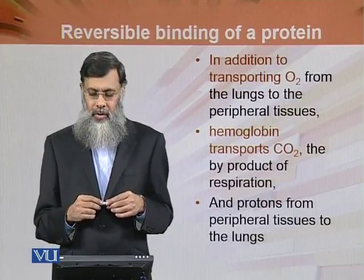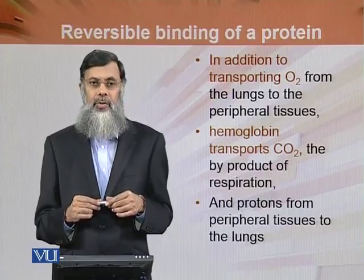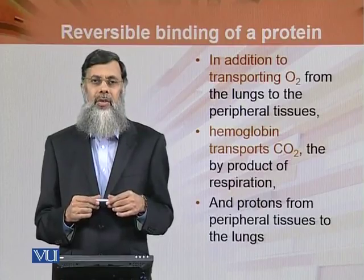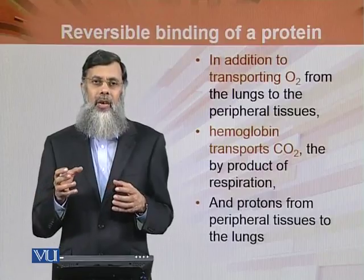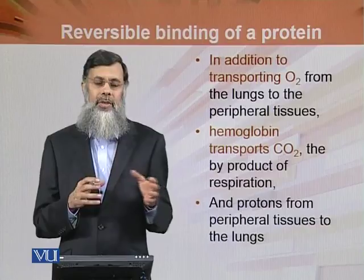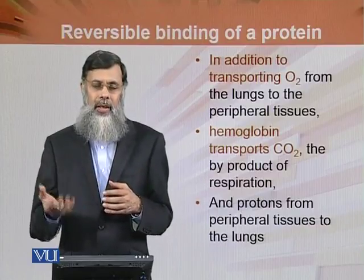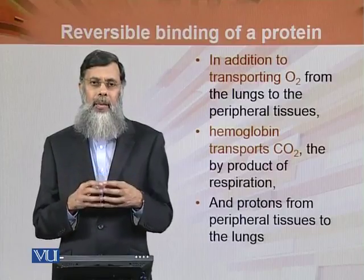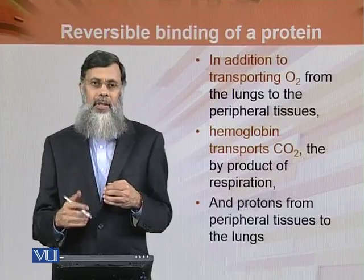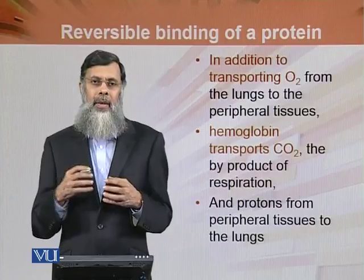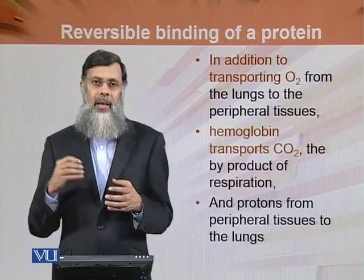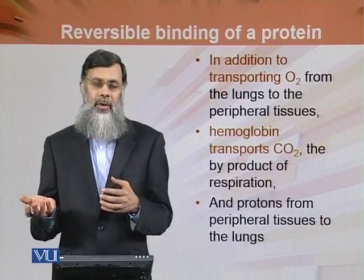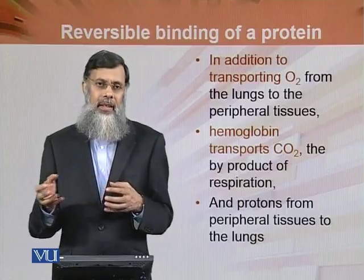In addition to transporting oxygen from the lungs to the peripheral tissue, hemoglobin also transports carbon dioxide — the product of respiration۔ Hemoglobin lung سے oxygen absorb کرے گا اور peripheral tissue میں جہاں ضرورت ہے وہاں deliver کرے گا۔ Peripheral tissue میں metabolism سے carbon dioxide بن رہی ہے — وہ اسی hemoglobin کے ساتھ attach ہوگی اور hemoglobin اسے lungs میں لے جائے گا جہاں وہ exhale ہو جائے گی۔